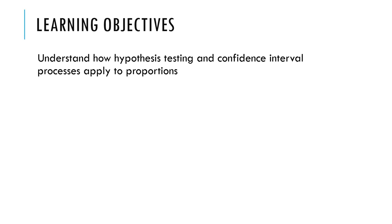Basically, I want you to understand after this lecture how our hypothesis testing and confidence interval process is applied to proportions instead of means. Because when you have categorical data, you end up with proportions in some cases, whereas with numerical data you end up with means. So let's walk through and see how that works.